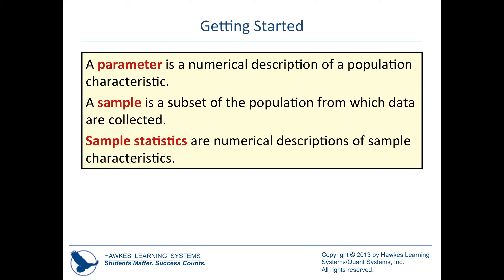A parameter goes with population — it's a numerical description of a population characteristic. A sample is a subset of the population from which the data are collected. Sample statistics are numerical descriptions of sample characteristics.